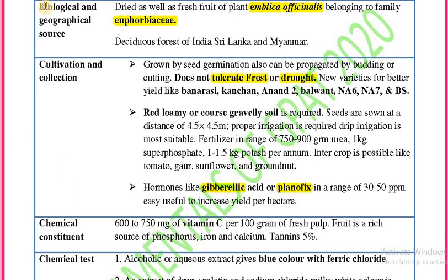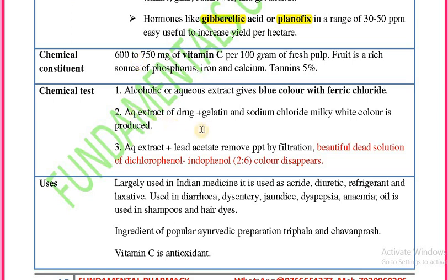The chemical constituents of Amla include the highest amount of Vitamin C — 600 to 750 mg per 100 grams of fresh pulp. It is a rich source of phosphorus, iron, and calcium, along with tannins. Chemical test: Amla gives blue color with ferric chloride, and the aqueous extract precipitates gelatin, forming a milky white solution.